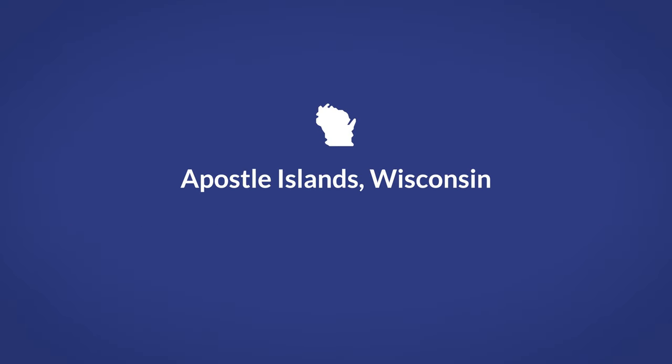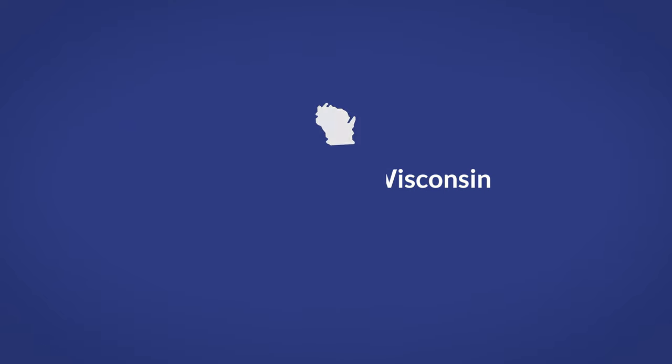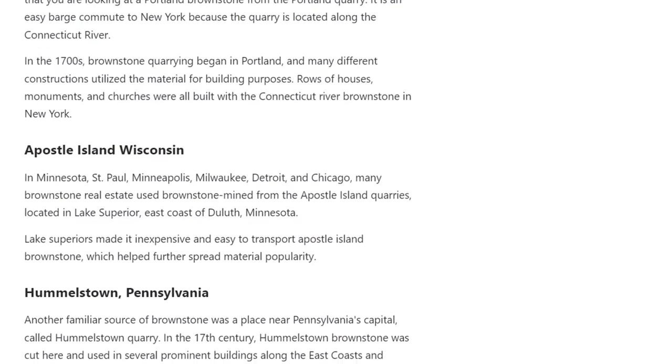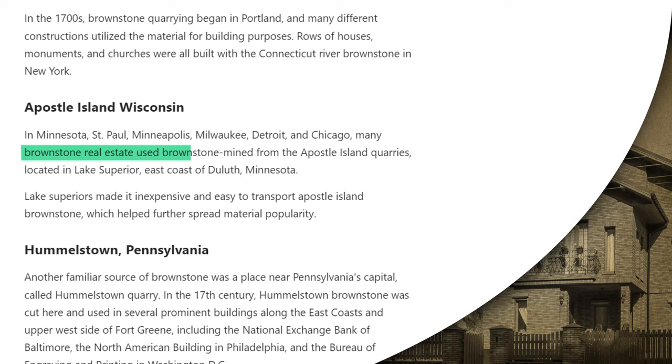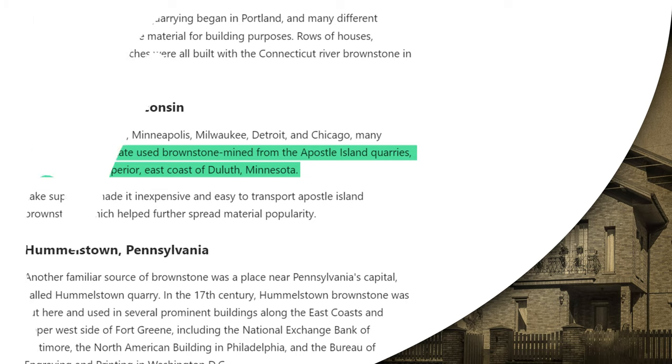Apostle Island, Wisconsin. In Minnesota — St. Paul, Minneapolis — as well as Milwaukee, Detroit, and Chicago, many brownstone buildings used brownstone mined from the Apostle Island quarries. Located in Lake Superior on the east coast of Duluth, Minnesota, Lake Superior made it inexpensive and easy to transport Apostle Island brownstone, which helped further spread the material's popularity.